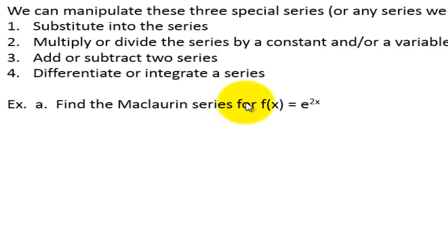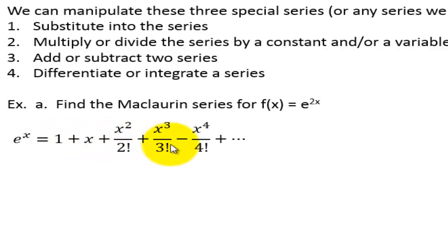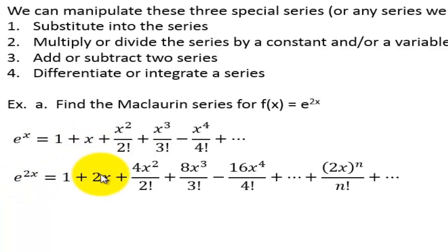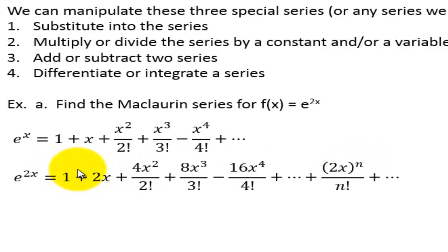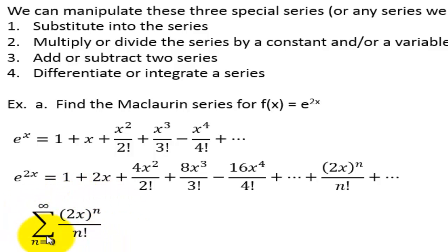Example a: find the Maclaurin series for f of x equals e to the 2x. This is going to be a replacement of x. Here is e to the x — we're going to replace all of the x's with 2x. That means this is going to be 2x, then 4x squared, 8x to the third, and 16x to the fourth and so on. So 2x is being raised to the nth power, over n factorial, starting n at 0. Here it is with summation notation.